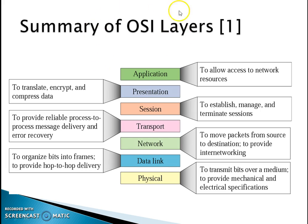Now let's summarize functionally all 7 OSI layers. The physical layer is used to transmit bits over a medium and to provide mechanical and electrical specifications. The data link layer is functional for hop-to-hop delivery and divides bits into frames. The network layer is used to move packets from source to destination, thus providing inter-networking.